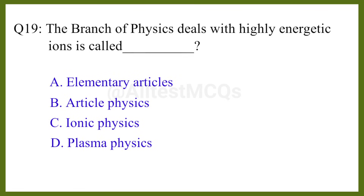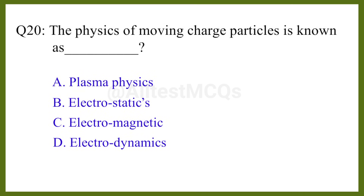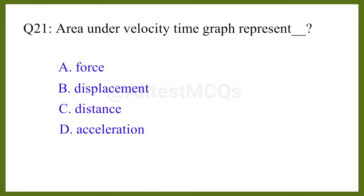Question number nineteen: The branch of physics dealing with highly energetic ions is called the correct answer is option B: plasma physics. Question number twenty: The physics of moving charged particles is known as the correct answer is option D: electrodynamics.